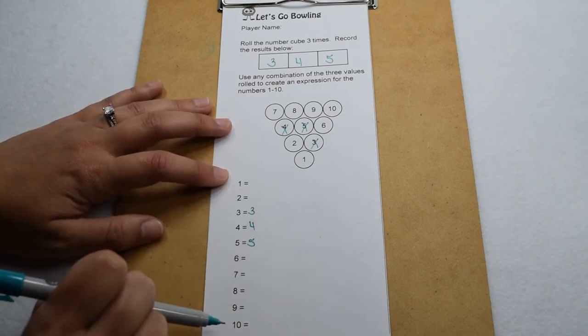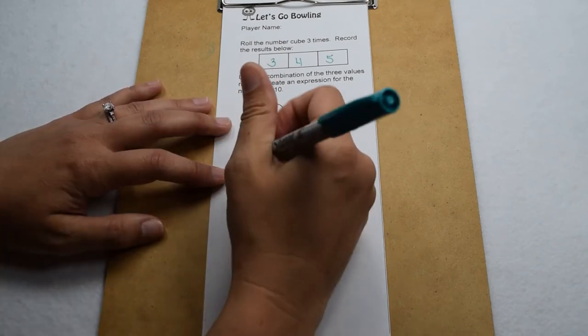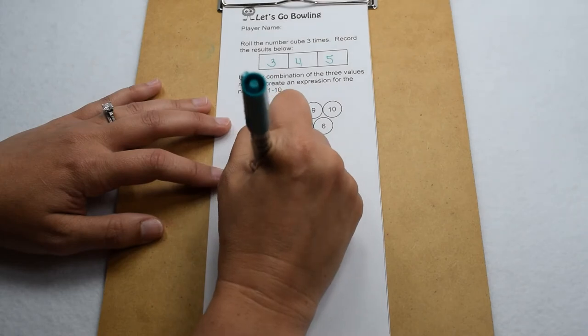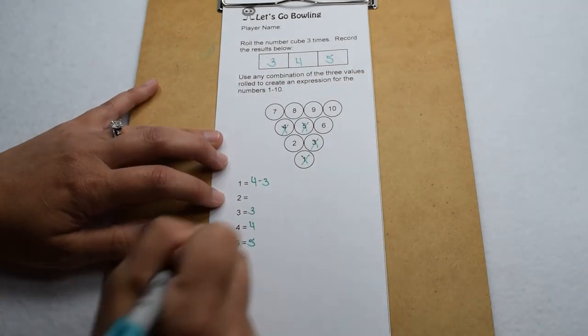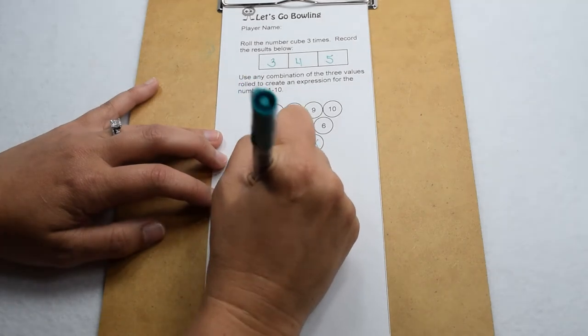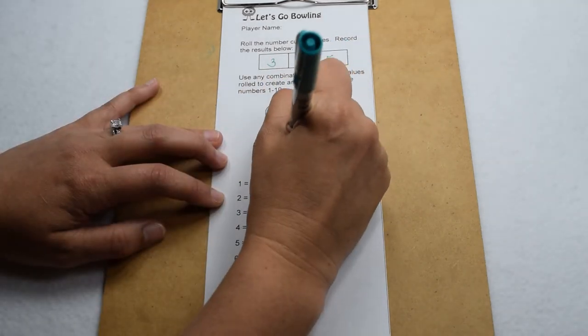We're going to kind of go sequentially through one through ten, but you can really go in any order. For one, we're going to start by subtracting. Four minus three gives me one, so we can knock down that pin. Same thing for two. I can do five minus three, that's going to give me two, so I can knock down that pin.